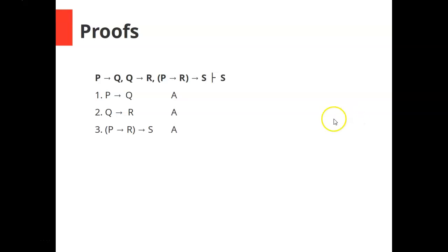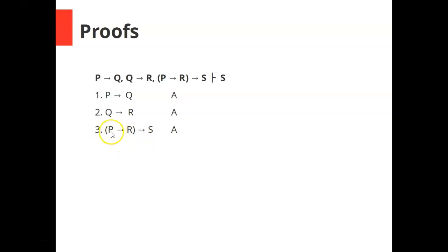Here's another one. We lay out our assumptions, trying to end up with S. We have three conditionals. We're trying to end up with S, and S is the consequent of a conditional. We have a bunch of conditionals, so hypothetical syllogism is likely. If we can get if P then R, we can use modus ponens to infer S. Looking at lines one and two — if P then Q, and if Q then R — we can infer if P then R by hypothetical syllogism from one and two. That gives us what we need: with lines three and four, we use modus ponens — a conditional and its antecedent — so we infer the consequent S.